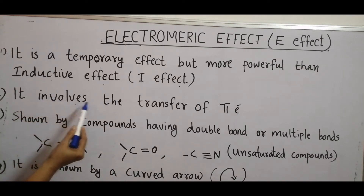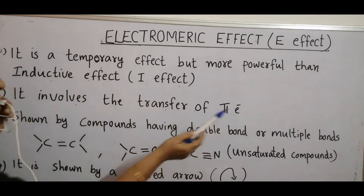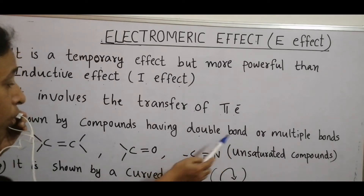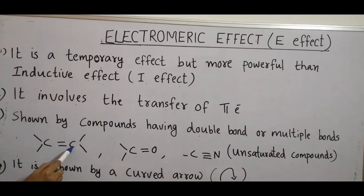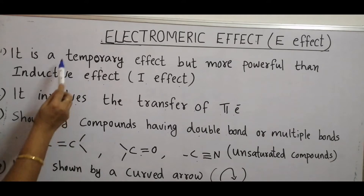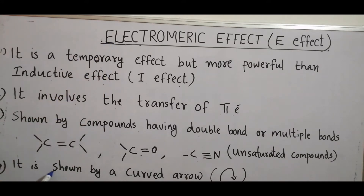Electromeric effect involves the complete transfer of pi electrons. It is shown by compounds having double bonds or multiple bonds — for example, alkene, carbonyl group, and cyanide group. These unsaturated compounds show electromeric effect, and this effect is represented by a curved arrow.